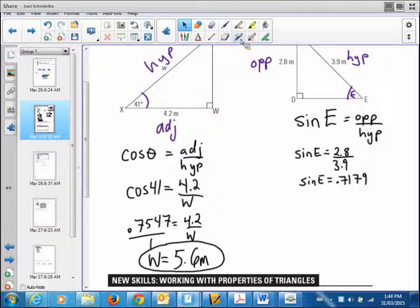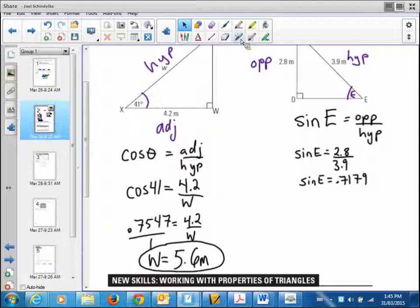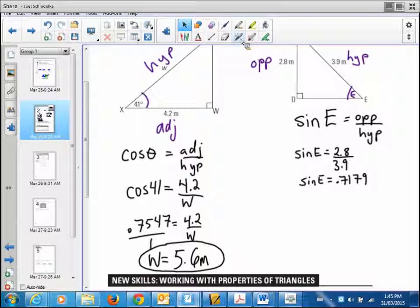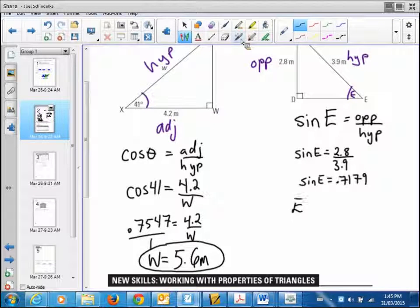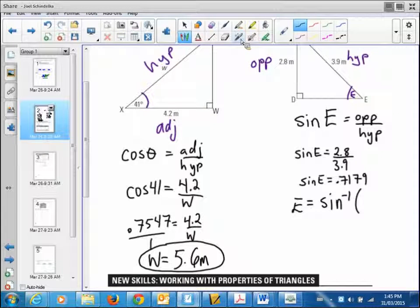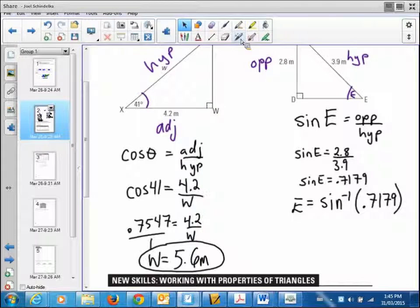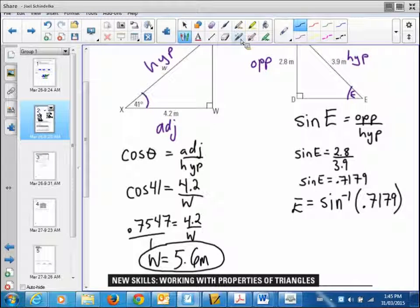And you'll need one of these calculators. Do you notice what's right above the second function button? When you look at sine and cosine, do you see that little minus one thingy? That's to undo this. Does this come back to you now? E equals the sine negative one of 0.7179. It's called the inverse. In this case, 46. Yeah, rounded properly. E is equal to 46.